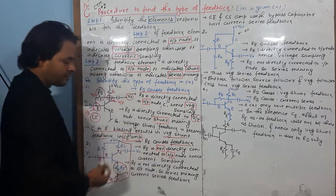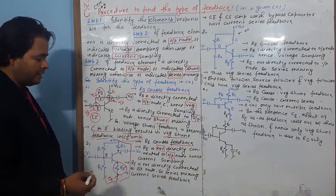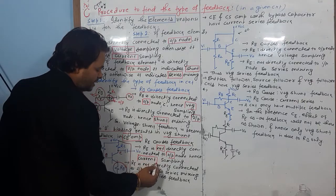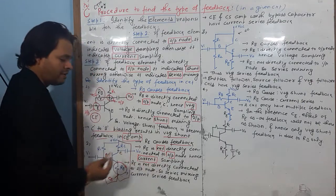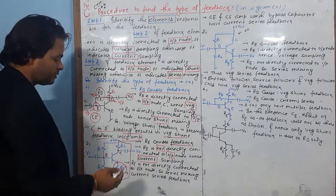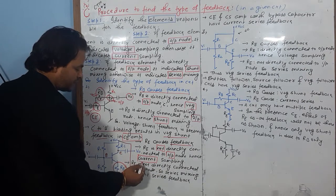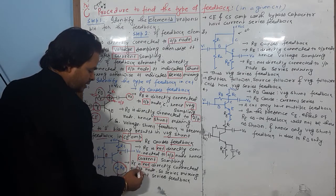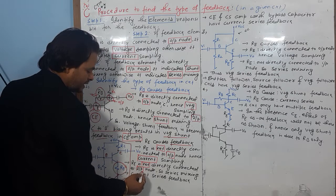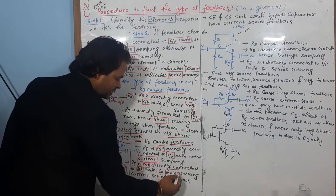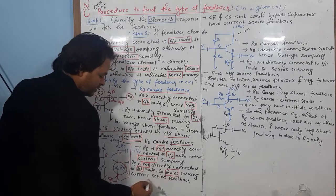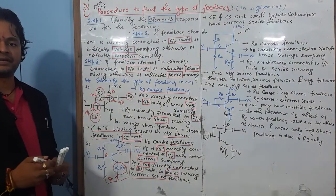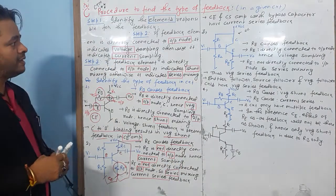Since RE is not directly connected to the output node, that indicates current sampling. And since it is not directly connected to the input node, that indicates series mixing. Hence, the feedback type is current series feedback. This is very important.